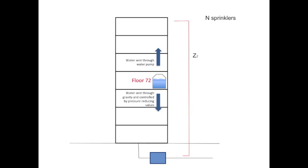Each floor contains pressure reducing valves. Sprinklers above this floor are operated with these valves, and the sprinklers below are operated with the combination of gravity and these valves.